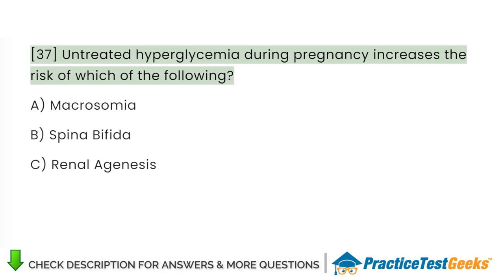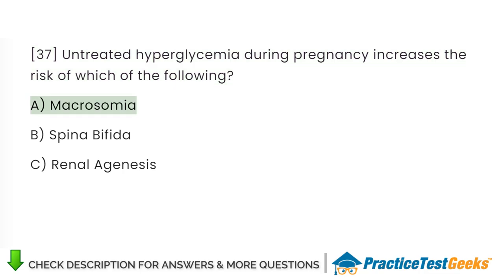Untreated hyperglycemia during pregnancy increases the risk of which of the following? A. Macrosomia. B. Spina bifida. C. Renal agenesis.